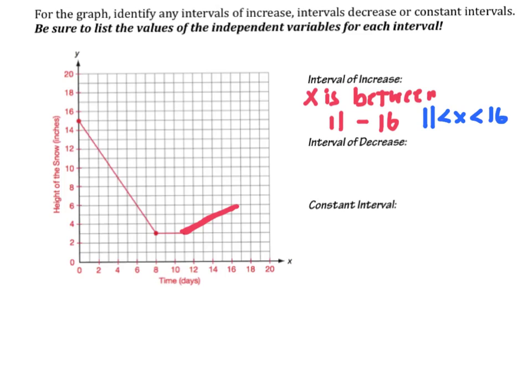Interval of decrease. I can see that's happening right here. And I can say that is happening when x is between 0 and 8. If I'm going to write that as a compound inequality, that would look like 0 is less than x, which also means x is greater than 0, and x is less than 8.